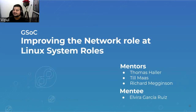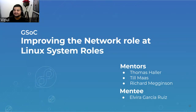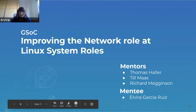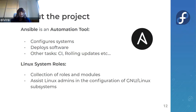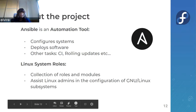Next, we have 'Improving the Network Role at Linux System Roles,' and the mentee is Elvira. Hi, I'm Elvira, and my work has been to improve the network role at Linux System Roles. Ansible is an automation tool that helps users configure different target systems at the same time, and also deploy software and many other tasks such as continuous integration and rolling updates. Linux System Roles is a collection of roles and modules that assist system administrators in configuring their Linux subsystems.